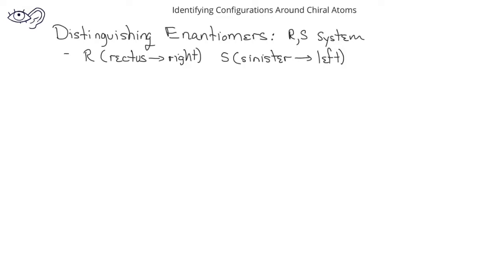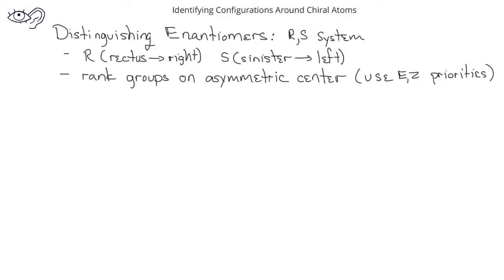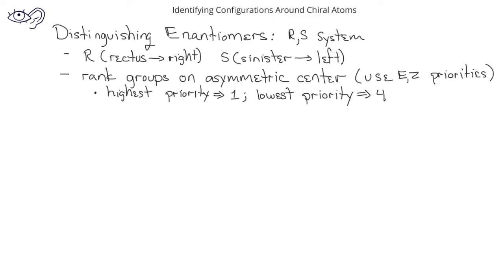In order to distinguish between the R and S enantiomers, we first have to rank the groups on the asymmetric center based on priority. This will be similar to the priority system we use to identify E and Z alkenes. A 1 is the highest priority, and a 4 is considered the lowest priority.